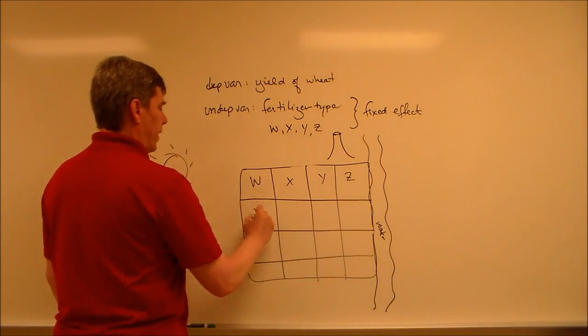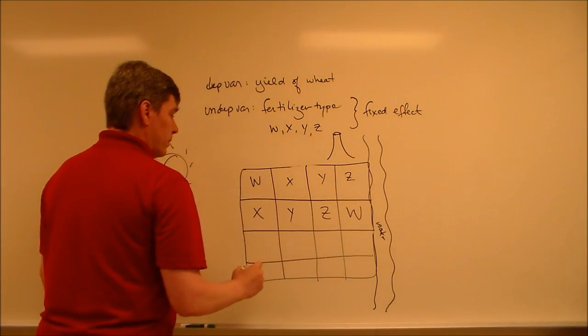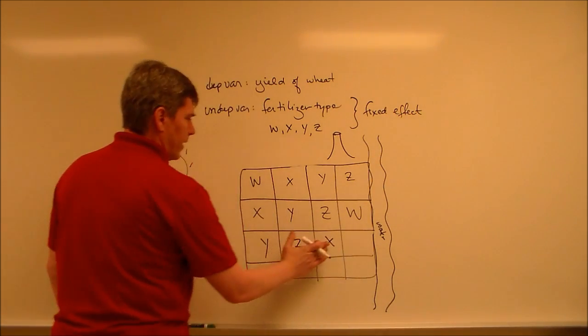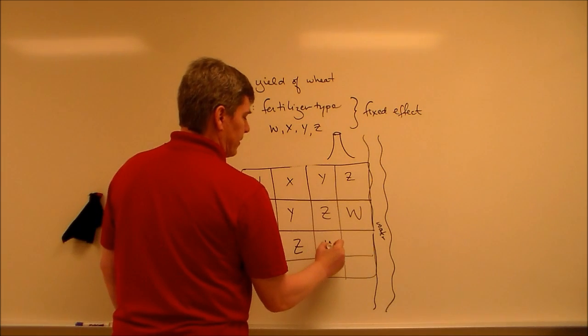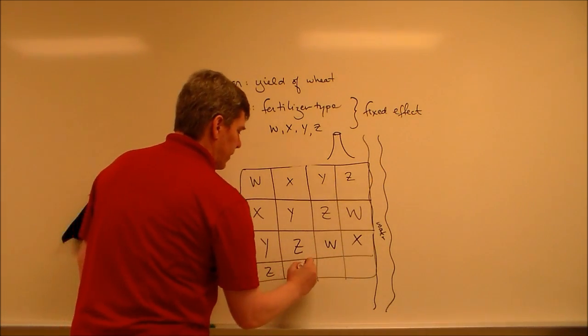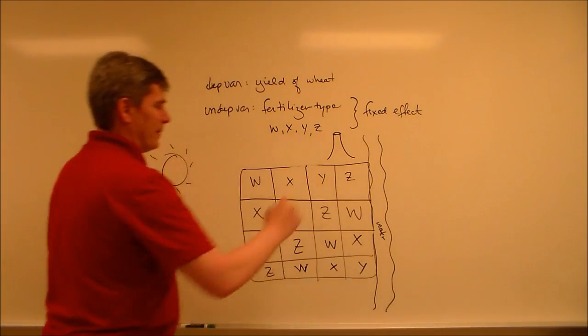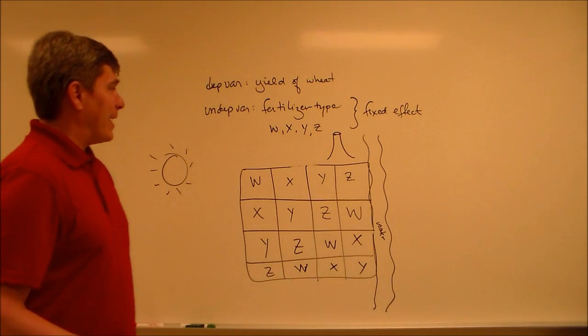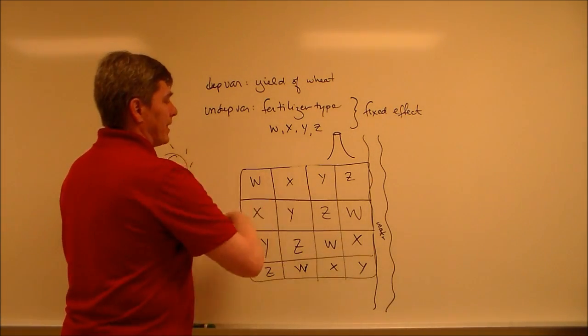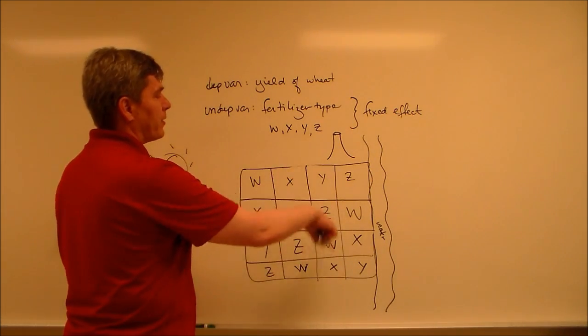And then X, Y, Z, W, Y, Z, X. There we go. And that's your basic Latin square design, 4 by 4. Notice that every row contains each of the fertilizers. Every column contains each of the fertilizers.